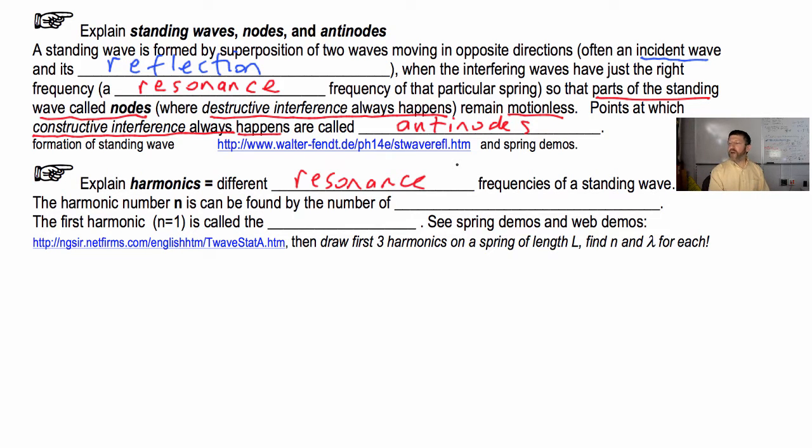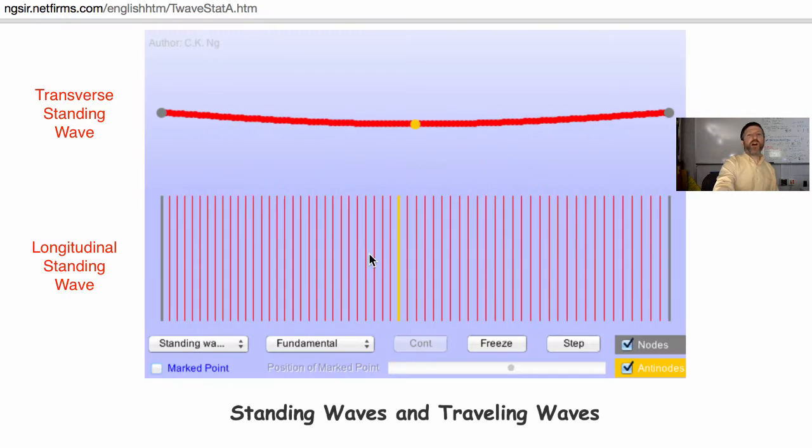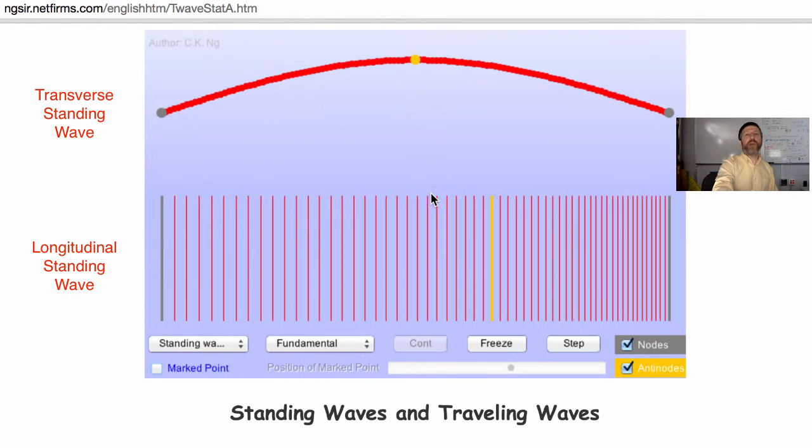And the harmonic number can be found by the number of antinodes. So I'm going to show you a bunch of harmonics. And the first harmonic with n equals one is called the fundamental. Fundamental is simply the first harmonic or the n equals one.